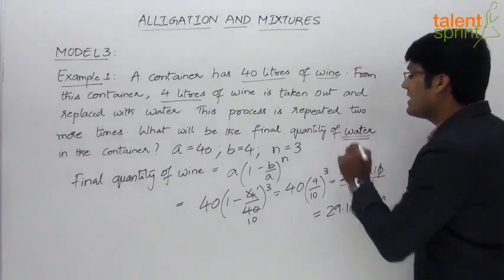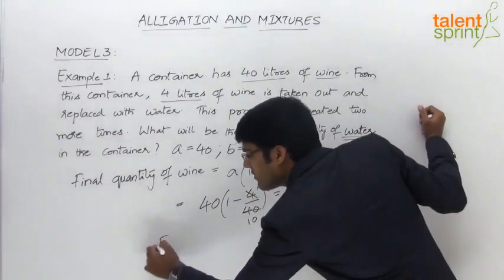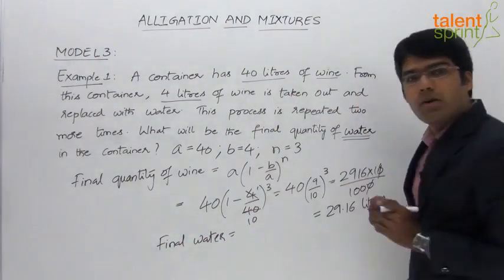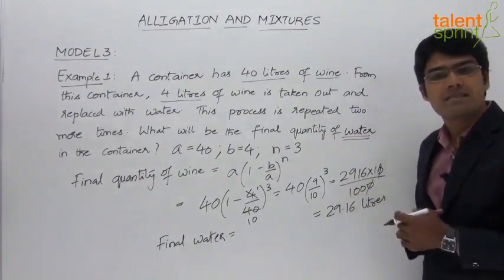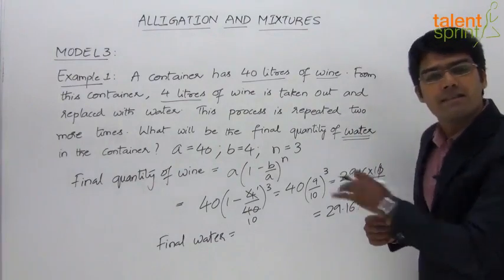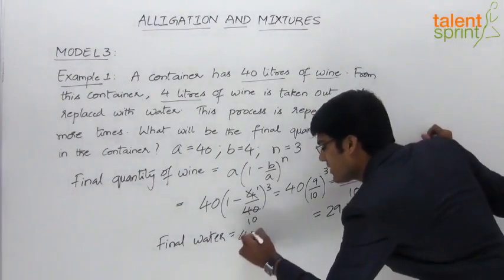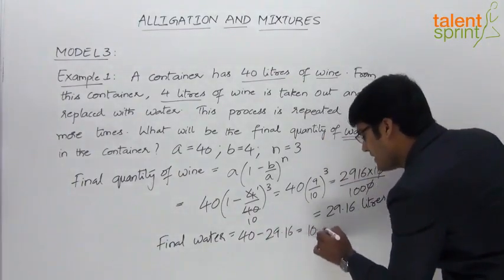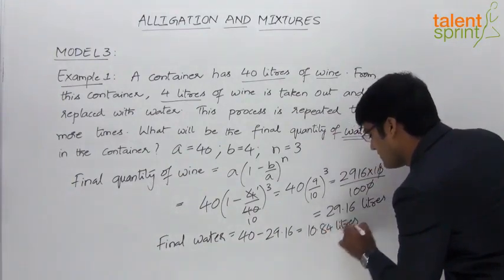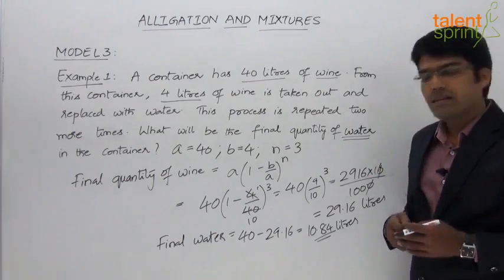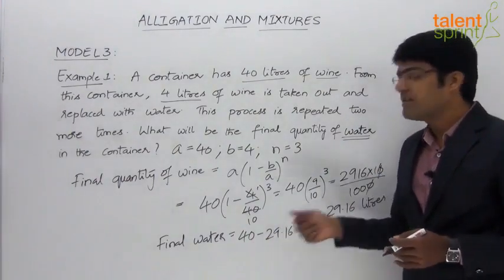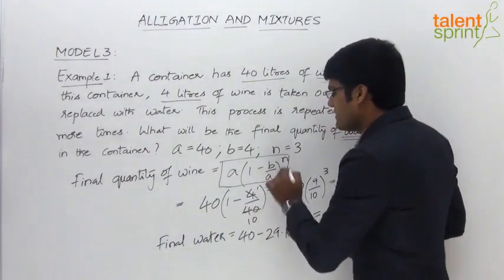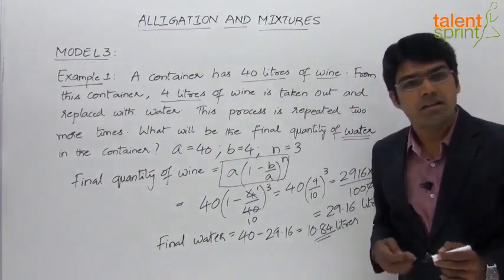But the question asks for the final quantity of water. The total quantity in the vessel is 40 liters, out of which 29.16 liters is wine. So 40 minus 29.16 gives us the quantity of water, which equals 10.84 liters. So the final quantity of water in this vessel is 10.84 liters. This is how we use the formula A into (1 minus B by A) whole to the power of n to solve questions based on removal and replacement.